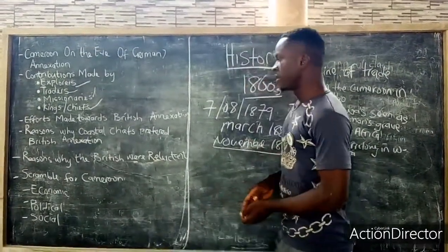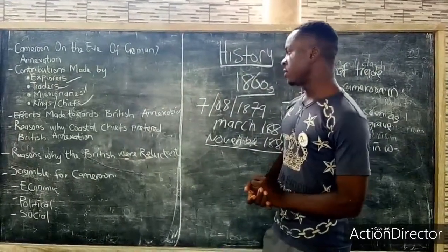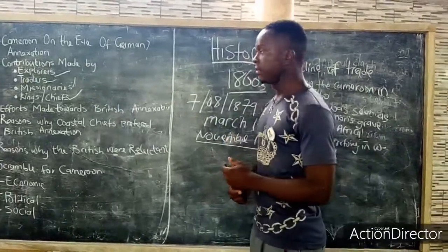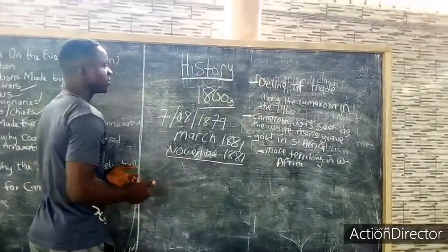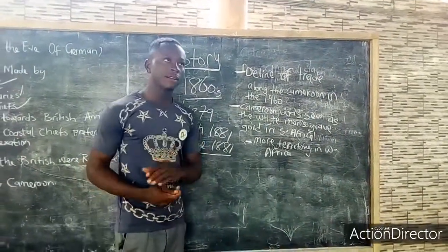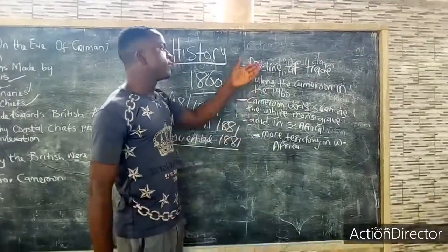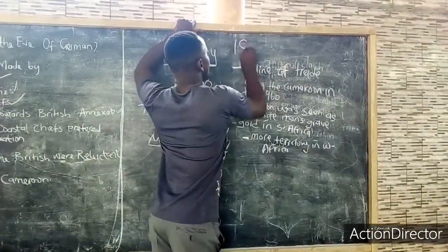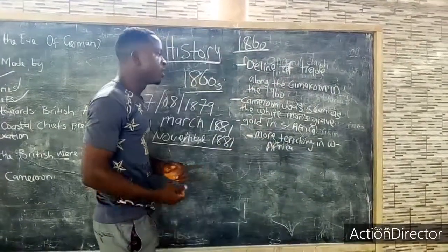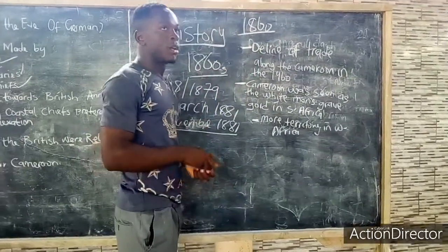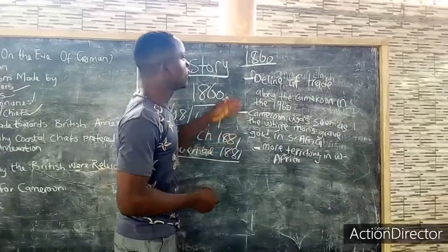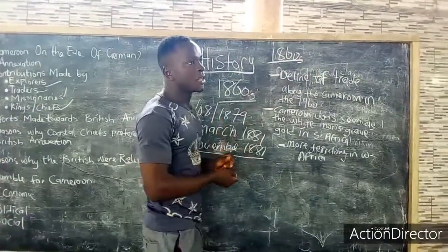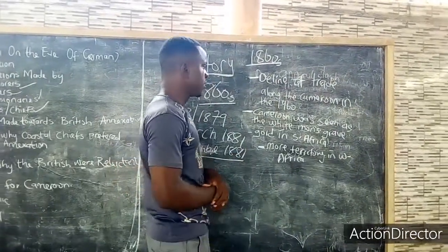We will continue with the reasons why the British were reluctant to annex the Cameroon territory. We have several factors. First, the declining of trade in Cameroon around the 1860s — during that period, British trade along the coast of Cameroon was already declining. Many other European powers who came for the scramble for Cameroon were dominating trade along the coast in the 1860s. So for that reason, the British never had interest in the annexation of the Cameroon territory.